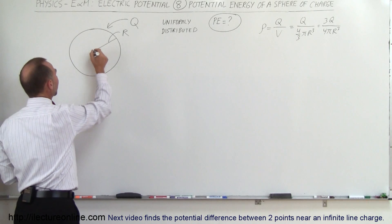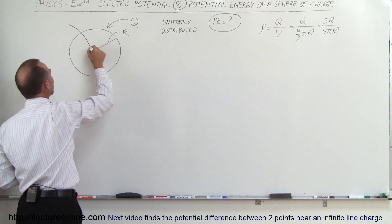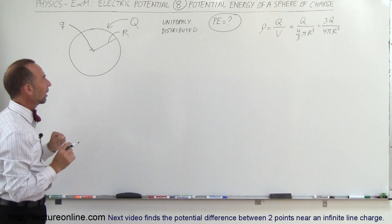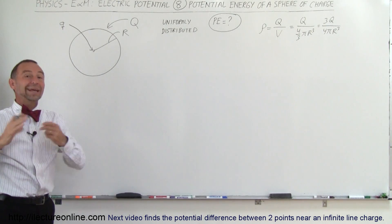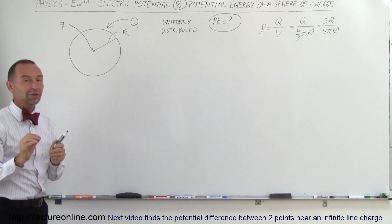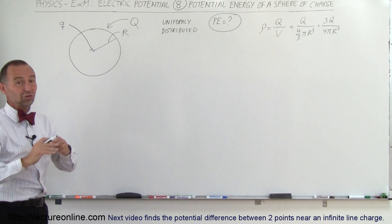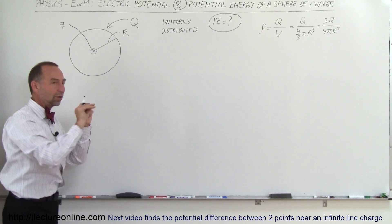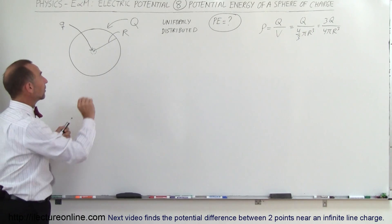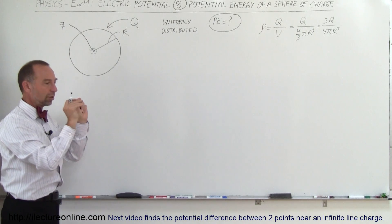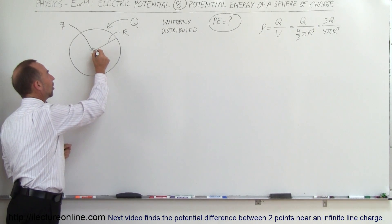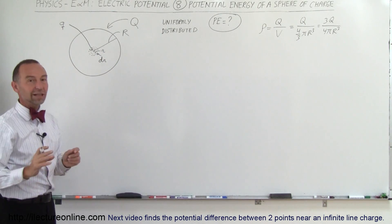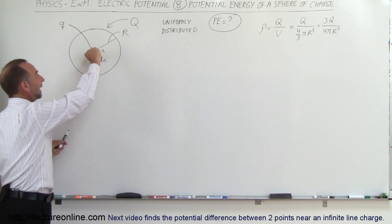Next, we place a very small, infinitesimally small amount of charge q at the very center of the sphere. That doesn't require any energy — if we make the charge and volume small enough, it takes no energy to place that first charge at the center since no other charges are present. Then we add a small shell of charge around it with radius r and thickness dr.